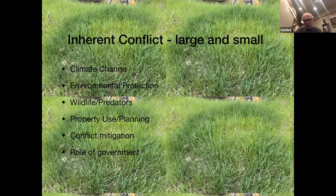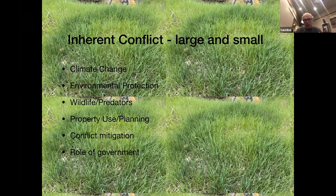Clearly we have lots of conflict to deal with. These are areas where conflict is inherently involved: climate change, of course, as discussed earlier; environmental protection aspects; wildlife and predators in our ranching world — we've been in conversations around predator-friendly agricultural practices; property use and planning; and the fairly contentious but also enlightening conversations around zoning and conflict mitigation. And in the background of all that, I would suggest, is the role of government.